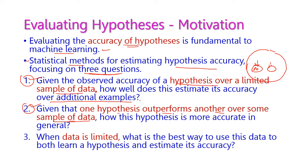Suppose we perform the hypothesis test on sample one and get some result, then apply the same test on sample two from the same population — the result will be different. With different hypothesis test results across samples, how can we say one hypothesis is more accurate in general?